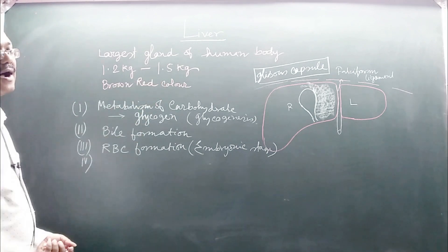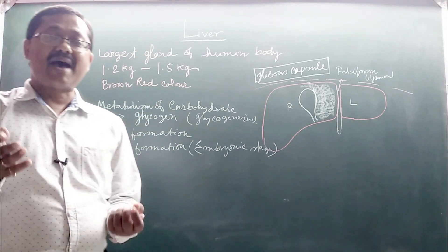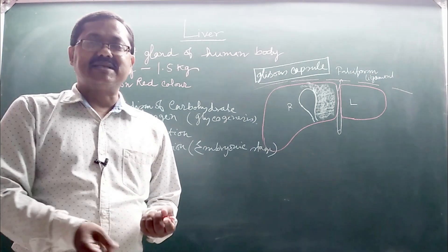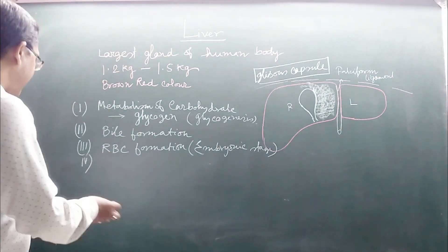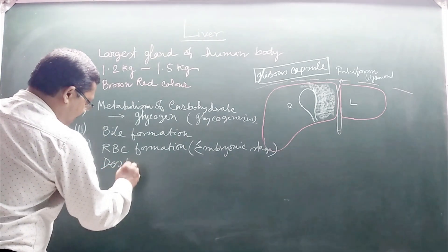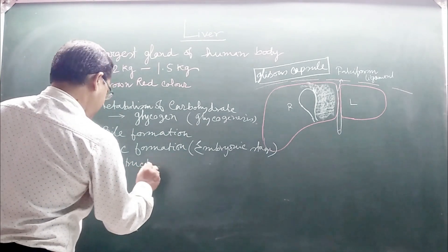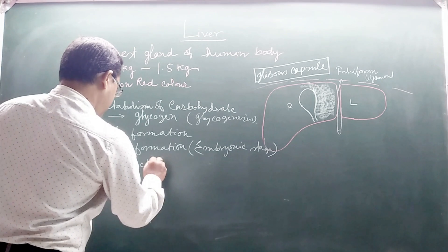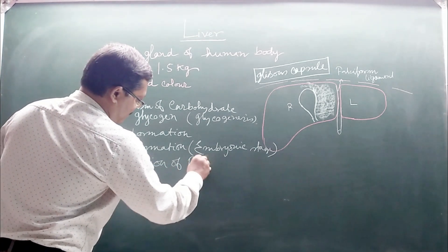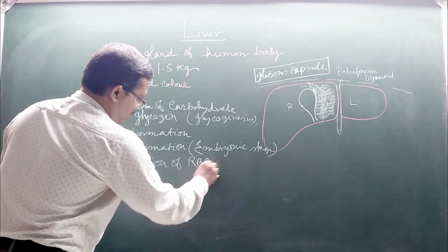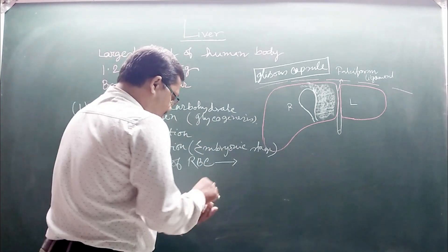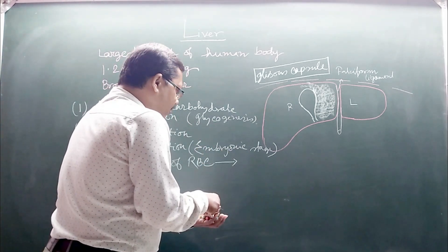RBCs are also destroyed in the liver when their lifespan is completed. The hemoglobin is converted into bilirubin and biliverdin, which are major components of bile.